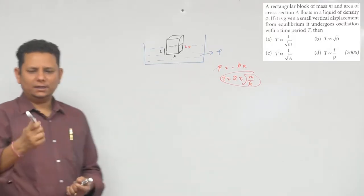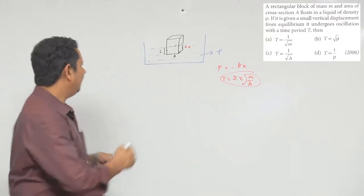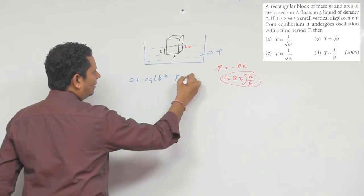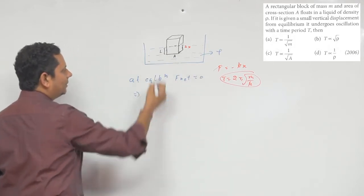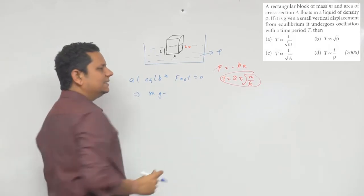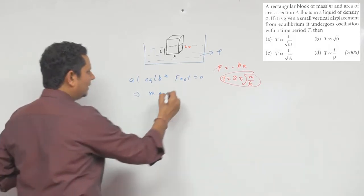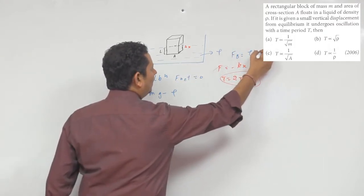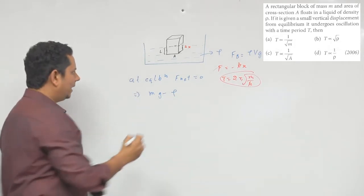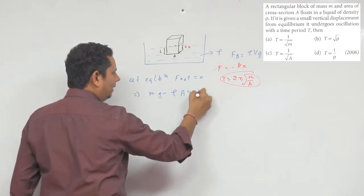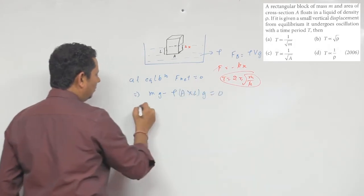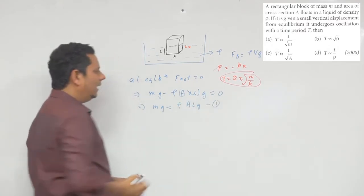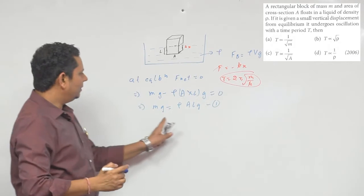Step 1: At equilibrium, F_net = 0. So mg minus buoyancy force = 0. Buoyancy force is ρVg = ρ·A·L·g. This gives mg = ρALg. That is our first equation. Note: we do not need to cancel g here.